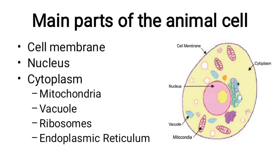The main parts of the cell are the cell membrane, nucleus, and cytoplasm. Inside the cytoplasm there are organelles: mitochondria, ribosomes, endoplasmic reticulum, and Golgi bodies.